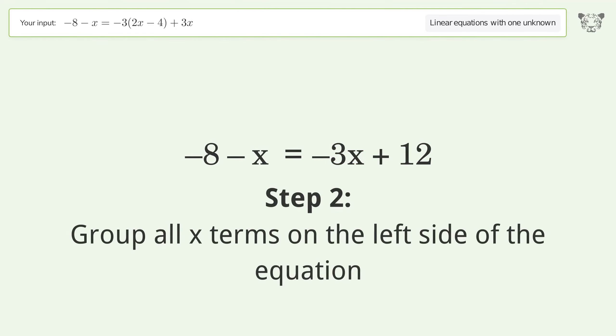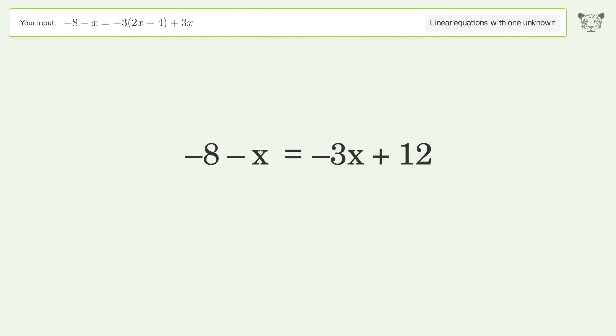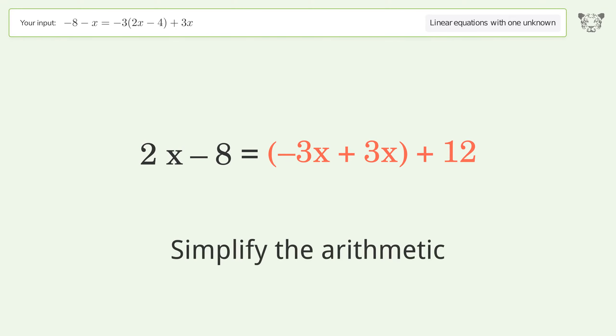Group all x terms on the left side of the equation. Add 3x to both sides. Group like terms and simplify the arithmetic.